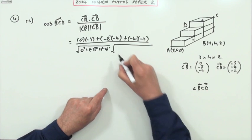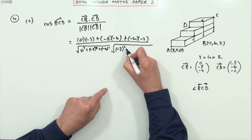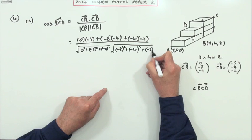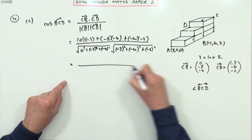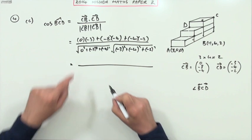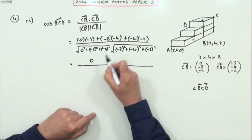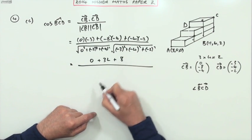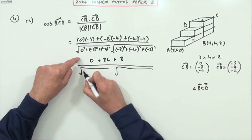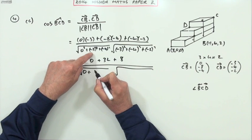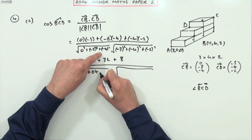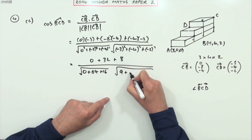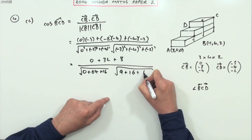Similarly for CD, it'll be the -3 squared—of course the negatives don't make any difference as far as square I'm concerned—and the -4 squared and the -2 squared. Now just crunch some of these numbers. That product is 0, that's plus 32, and that's plus 8. For these square roots, that's a 0, that's a 64, and that's a 16. That's a 9, that's a 16, and that's a 4.